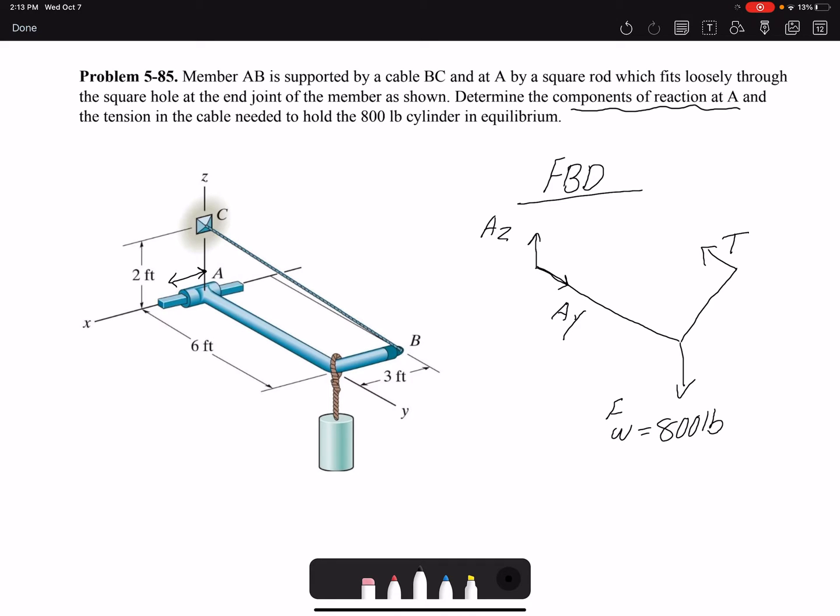Now this support also applies reaction moments. Because it's a square rod in a square hole it cannot rotate about X axis. So we are going to have a resistive moment about X axis. Also it cannot rotate around Y or Z axis either. So we are going to have reaction moments about those axes as well. So all three reaction moments are present in this problem. So we have MX, MY and MZ.